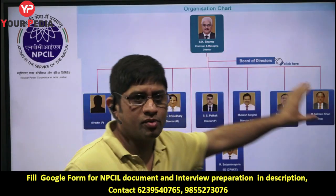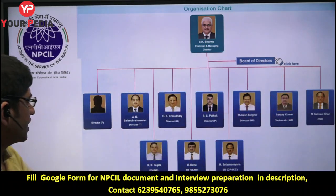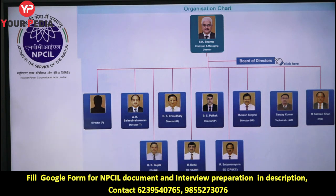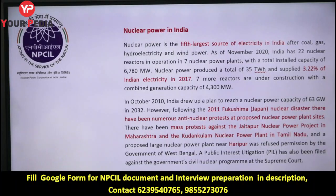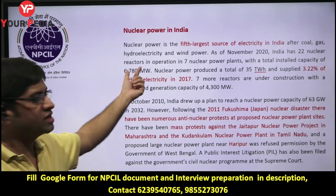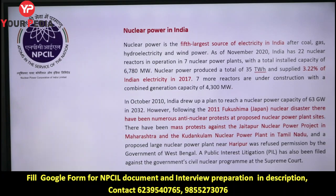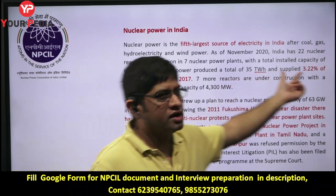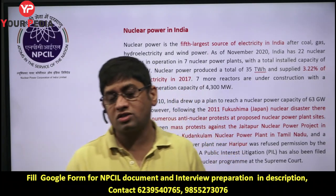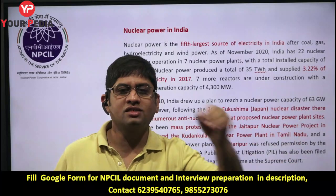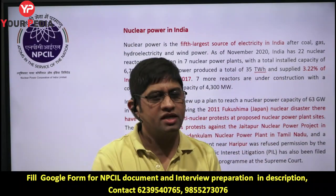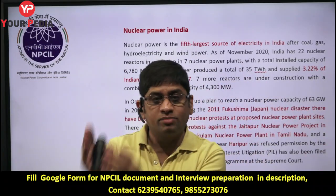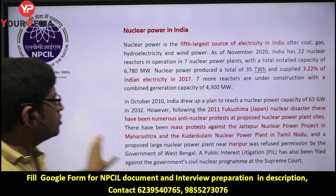The organization chart of any organization is very important — you should know who the CMD is, followed by directors: Director Finance, Director Operations, Director Personnel, Director HR. Nuclear power is the fifth largest source of electricity in India — first is coal, then gas, then hydroelectricity, then wind power, then solar, and nuclear. There are 22 reactors and approximately 6,780 MW — just under 7,000 MW — which is 3.22% of total electricity generated in India.